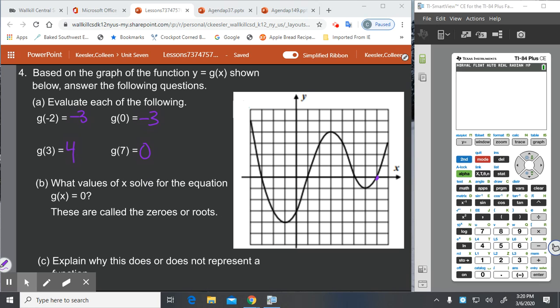What values of X solve for the equation G of X equals zero? These are also called the roots. So we know the roots. We've seen roots before. This is actually what we call a polynomial function. So all the roots are where it crosses the X axis, which are these points here. So we have X equals negative three, X equals one, five and seven.